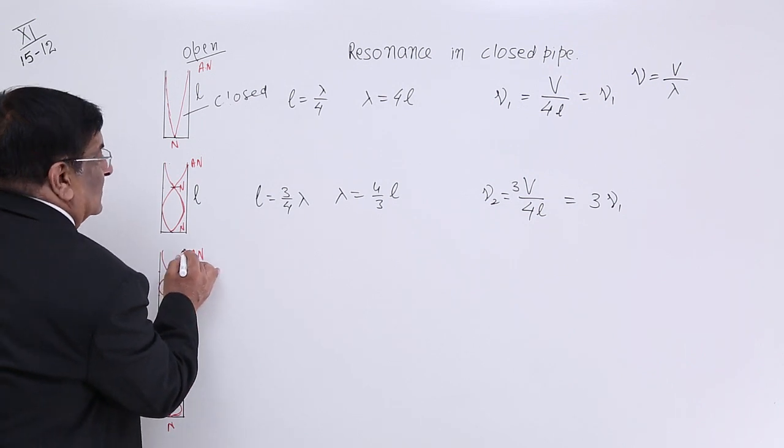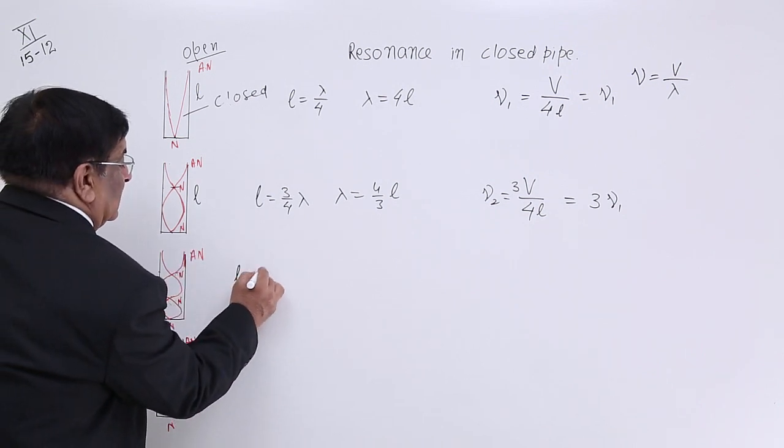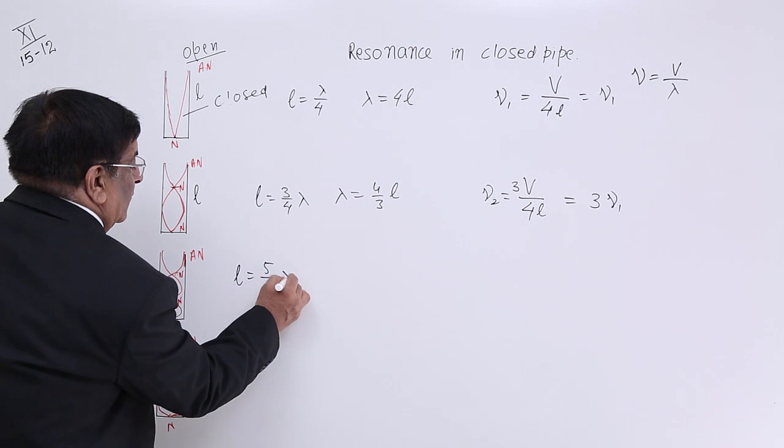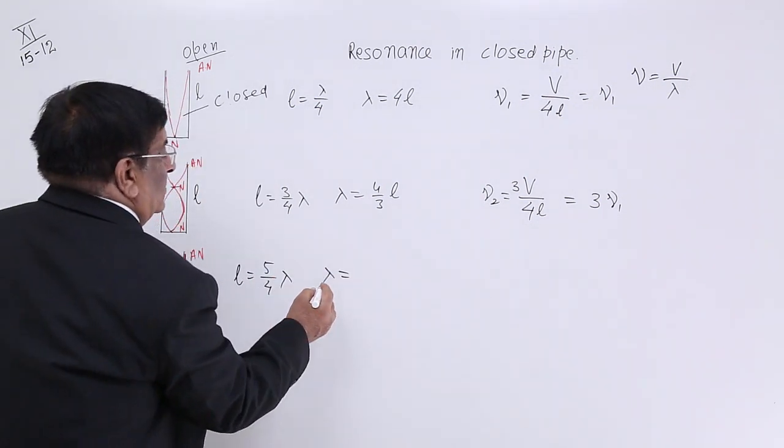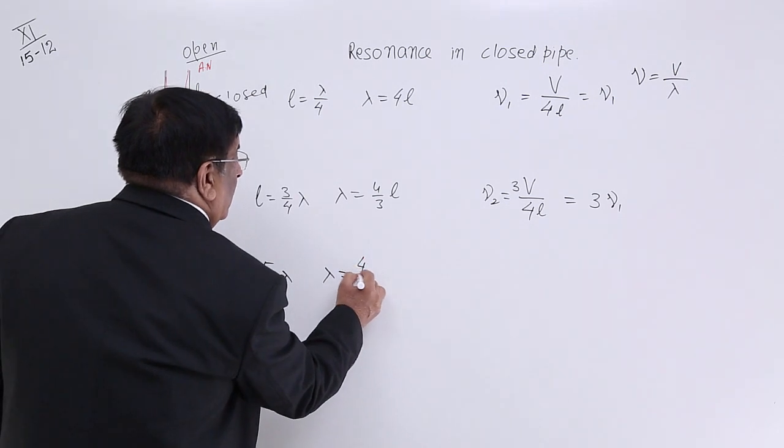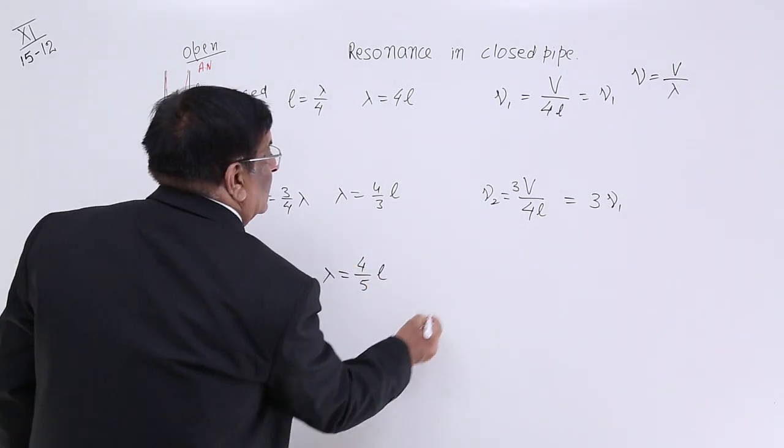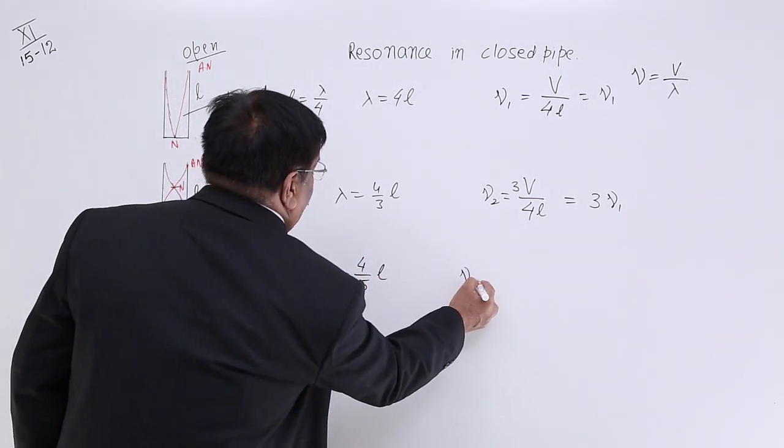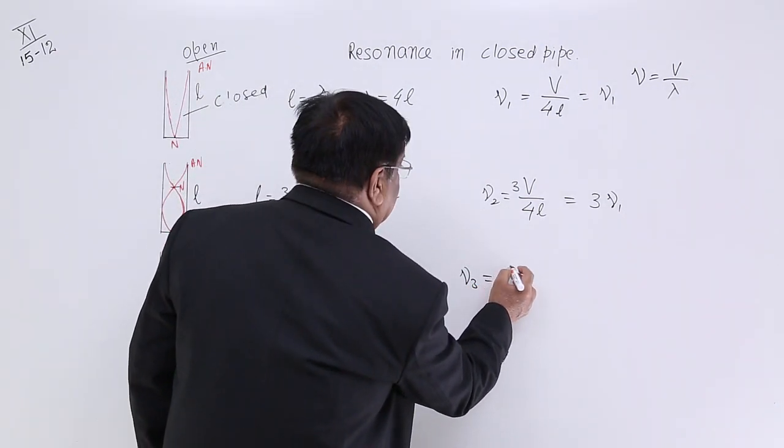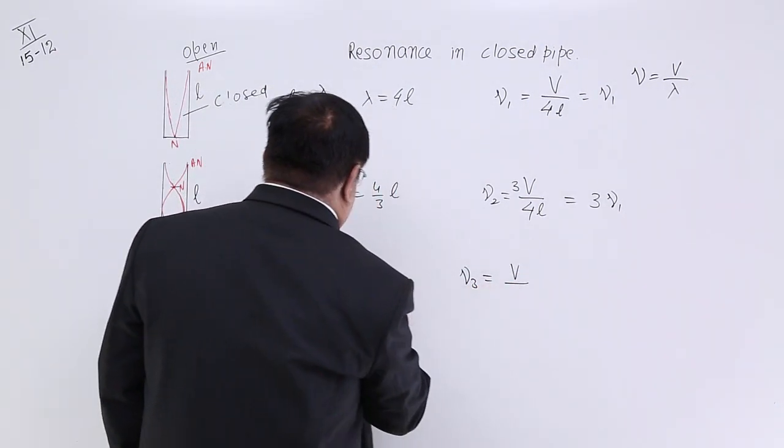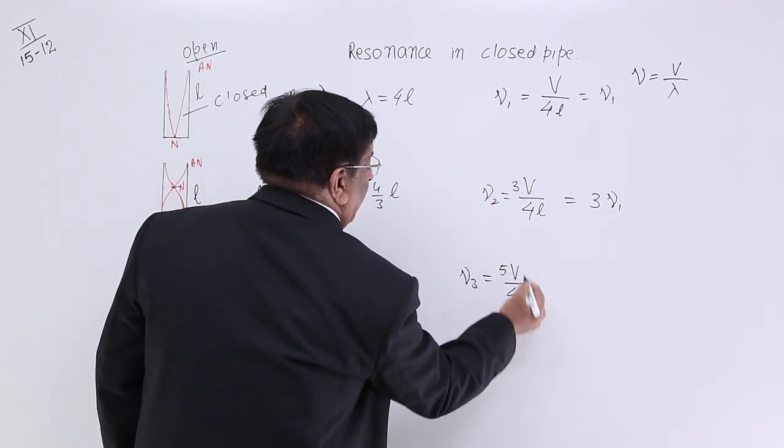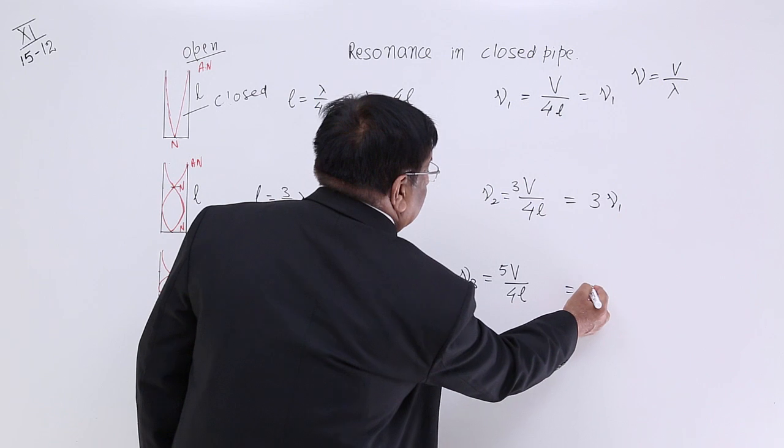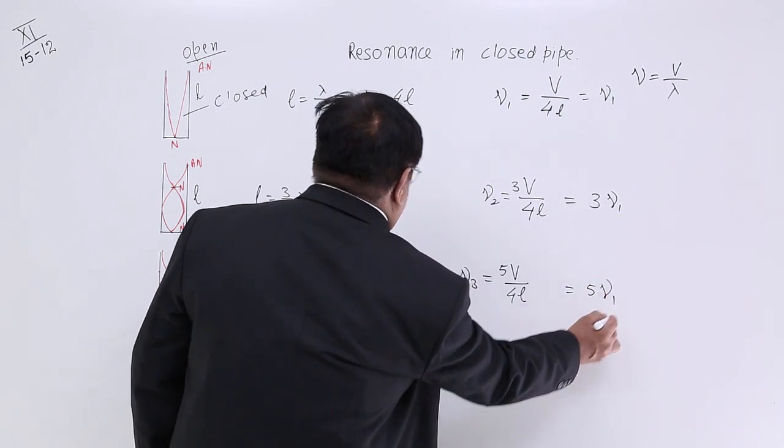This is 1 lambda. This is one-fourth lambda. So length is equal to 5 upon 4 lambda. So lambda is equal to 4 upon 5 length. So we have frequency here which is equal to V upon lambda and lambda is 4L upon 5. And now you find this is equal to 5 of this.